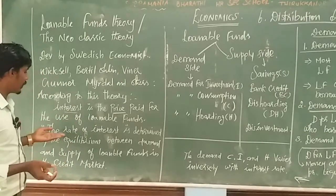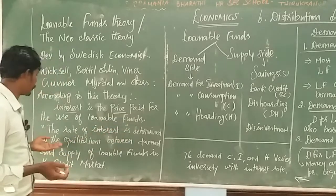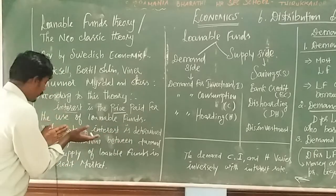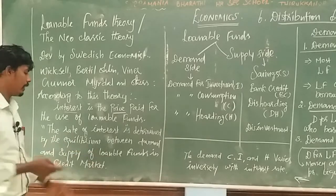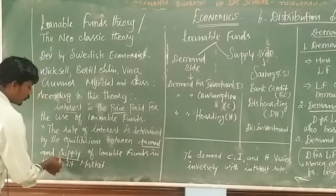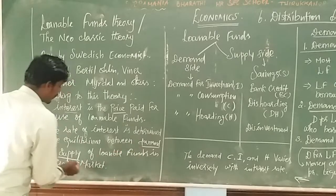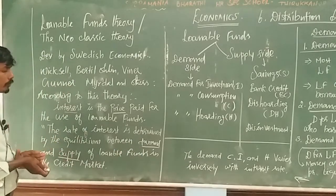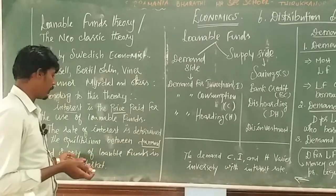The rate of interest is determined by the equilibrium between demand and supply of loanable funds. One side is the demand and the other side is the supply — there are two sides in the loanable funds market.